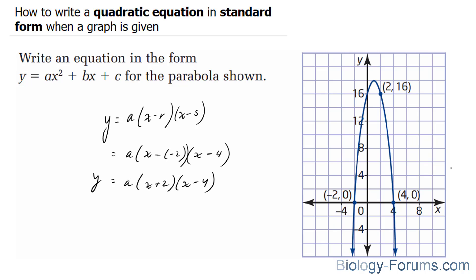The next thing you'll need to do is find out a. And notice that they've provided a point which we can use to find out what our a is. So we'll replace every instance of x with 2 and the instance of y with 16.